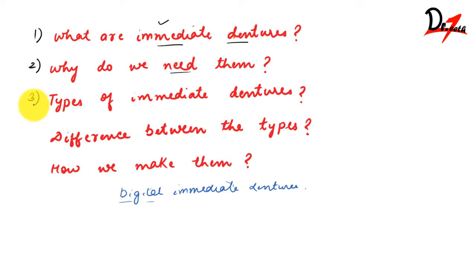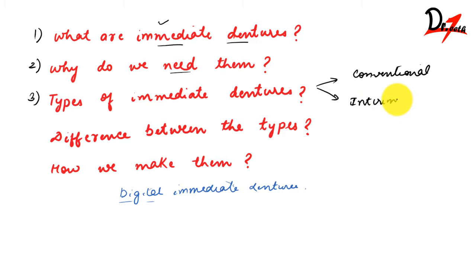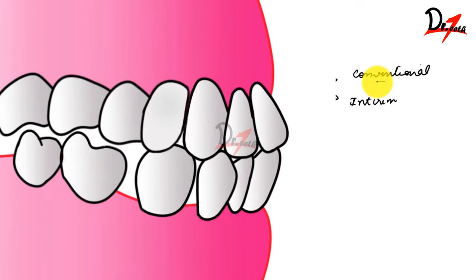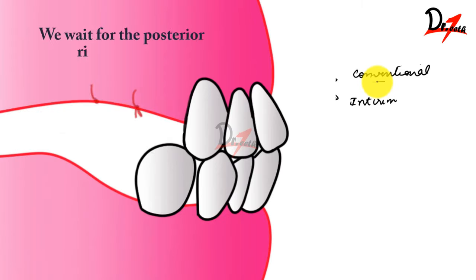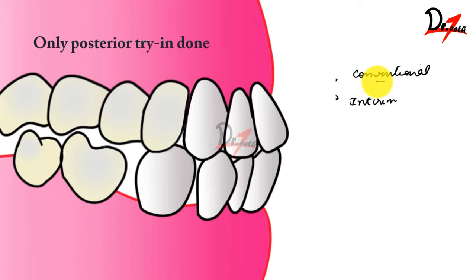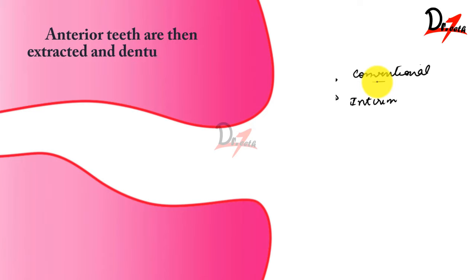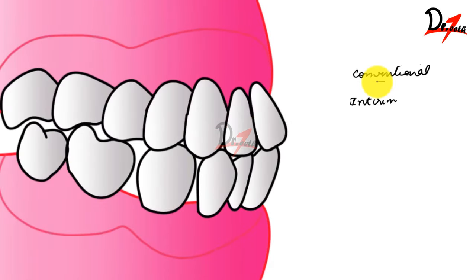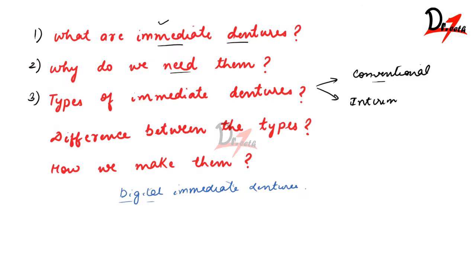There are two types of immediate dentures: conventional and interim. In the conventional type, we extract the posterior teeth and wait four to six weeks for the ridges to heal, but we don't extract the anterior teeth. Since the patient retains their anterior teeth, aesthetics are not compromised, and the posterior ridges get time to heal. After healing, we make the impression and begin the process.